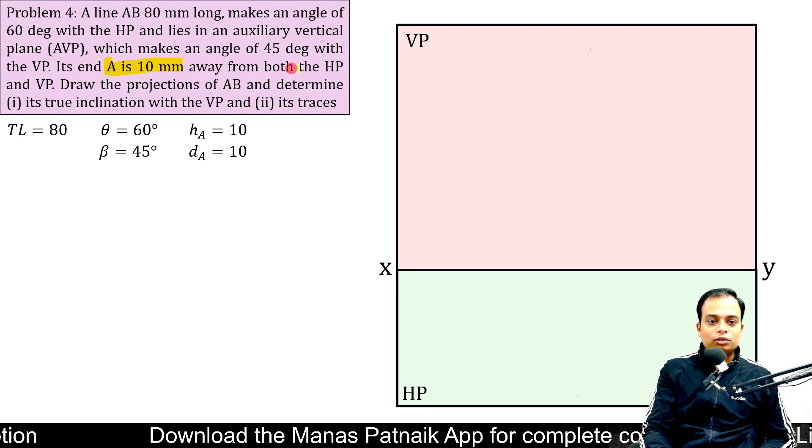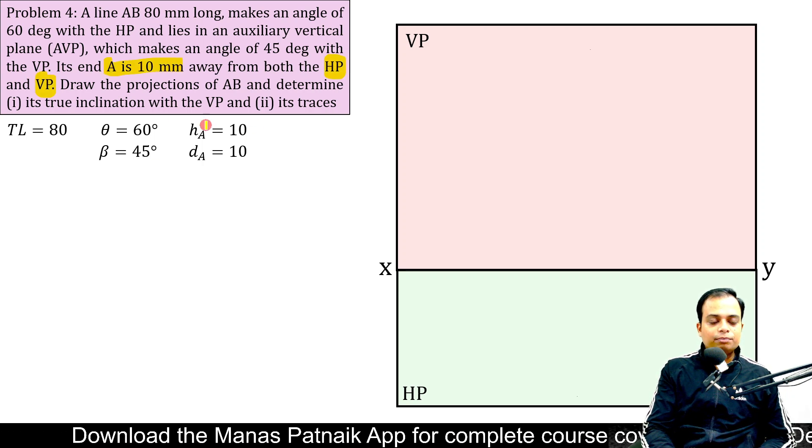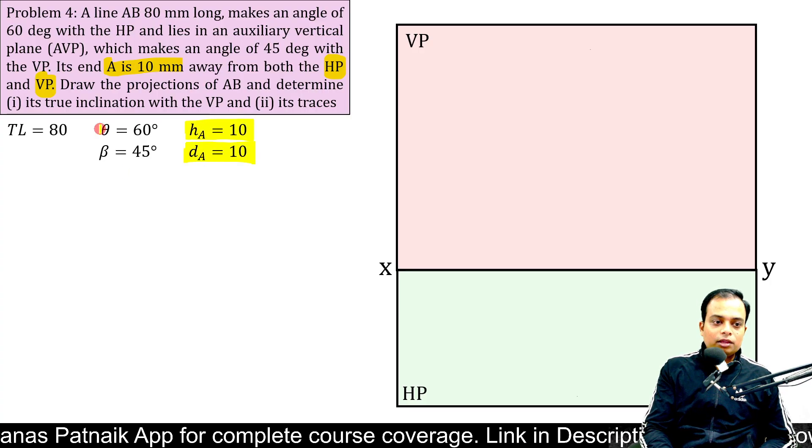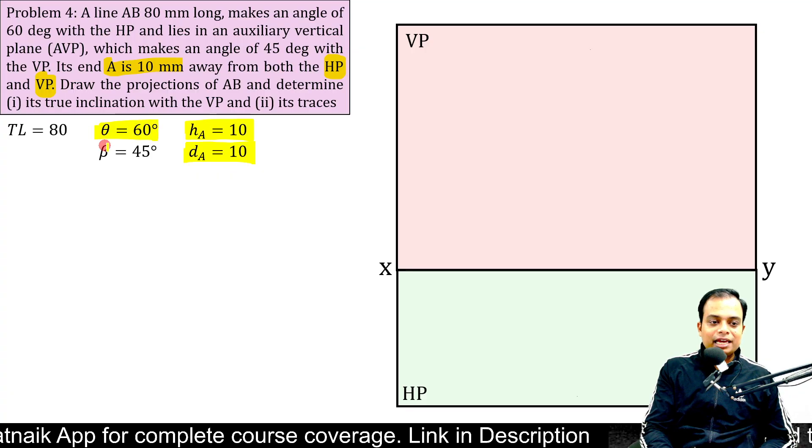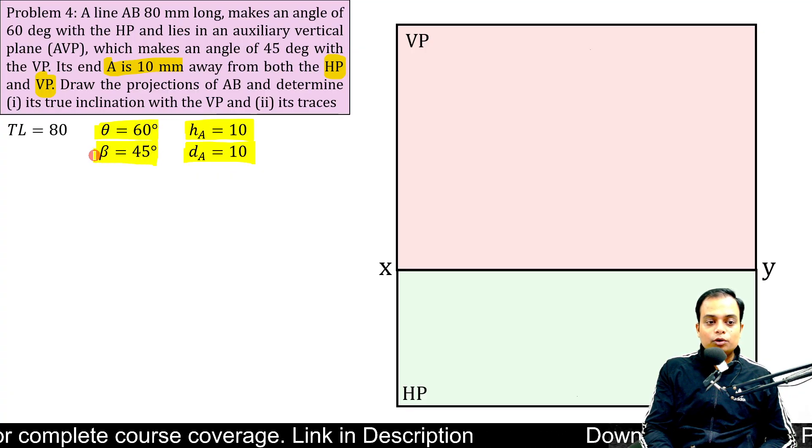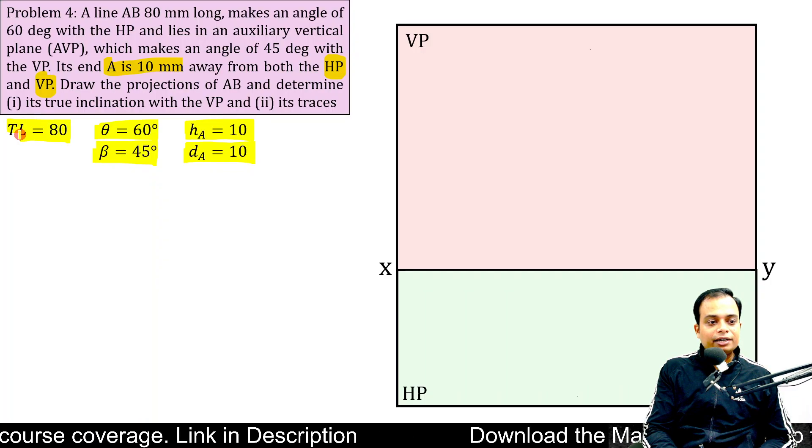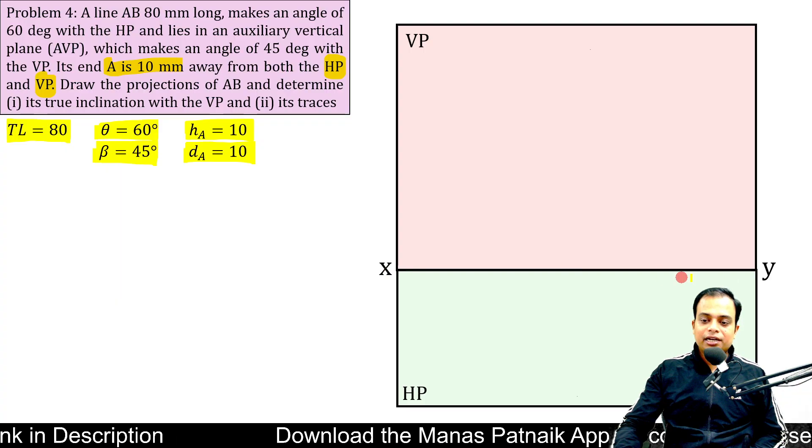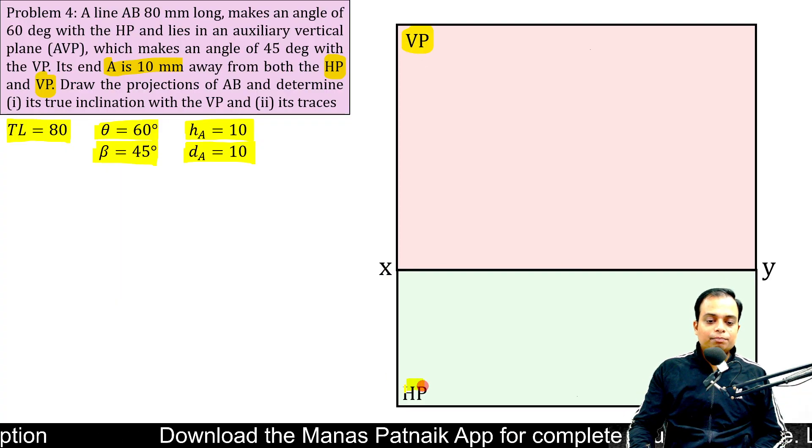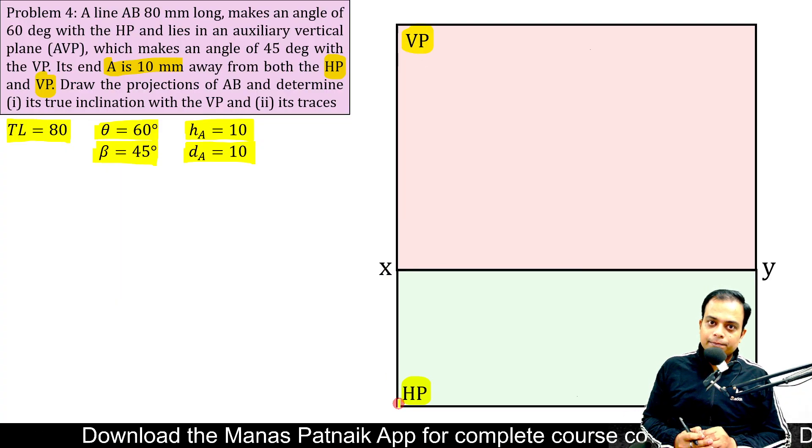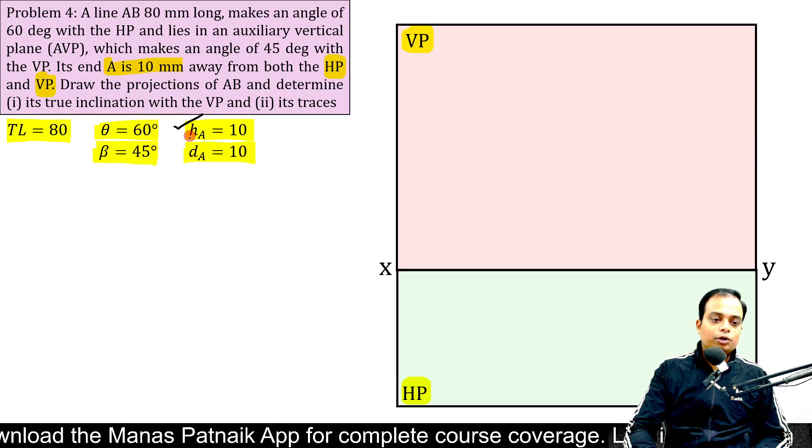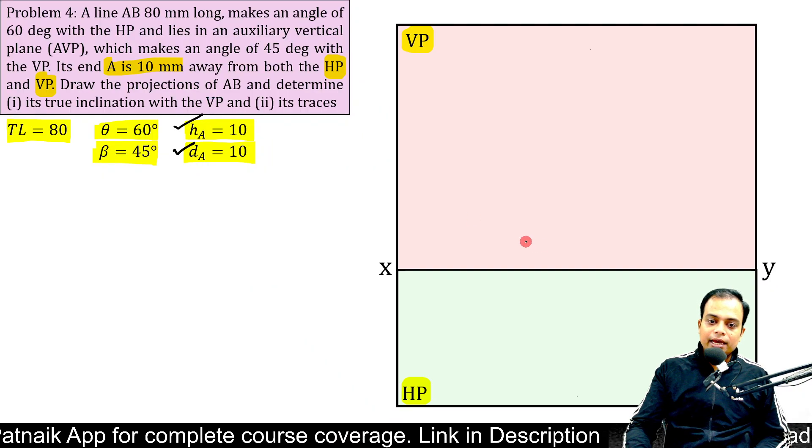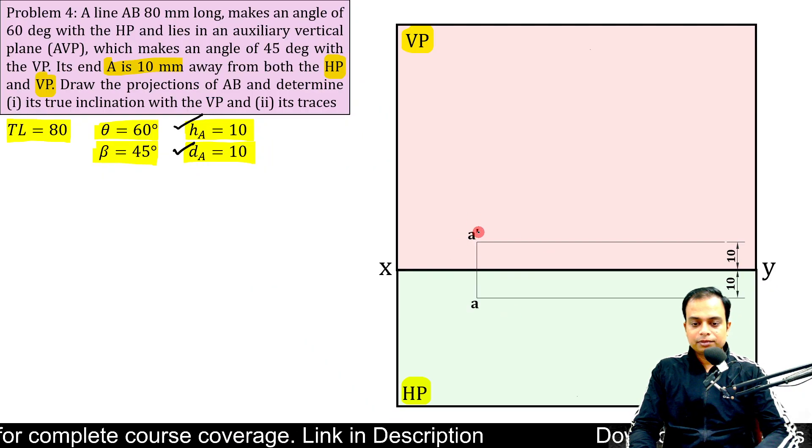A is 10 mm away from both HP and VP. So distance of endpoint A from HP and the distance of endpoint A from VP. All other data's angle made by the line with HP, angle made by the top view of the line with VP and the true length of the line itself. All of these data's have been given. Now, we'll simply make a partition line above which we have your vertical plane and below we have the horizontal plane. The first thing that we'll do immediately is that I am going to fit these two dimensions. So it is a case of first quadrant, H above and D below. Let me mark this A dash and A.